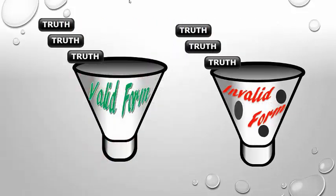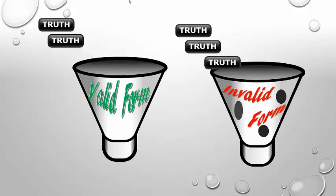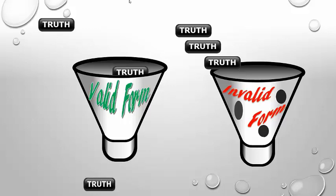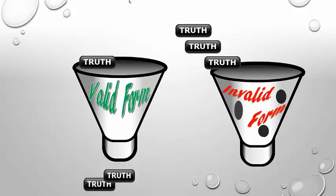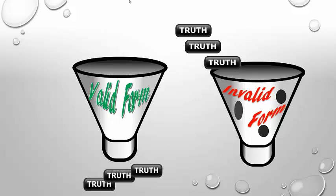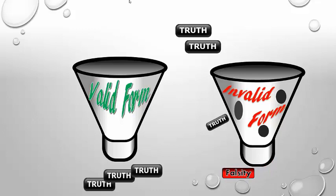If you have a valid argument, it has a valid form or shape. It's set up so that the truth of the premises will be funneled into the conclusion, so to speak. That's why we call such arguments genuinely truth-preserving — they do not lose truth on the travel from premises to conclusions. In the case of an invalid argument, one that has an incorrect or fallacious form, the truth can be lost on the way from premises to a conclusion.